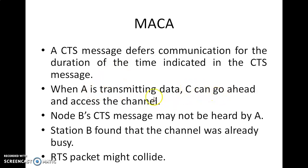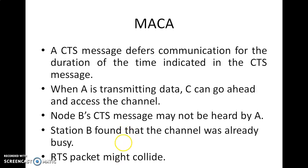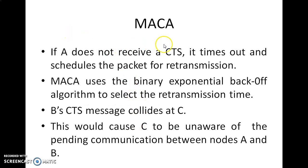When A is transmitting data, C can go ahead and access the channel. Note that B's CTS message may not be heard by A. If A is communicating to B and B's CTS message is not heard by A, station B may find that the channel is already busy. RTS packets may collide because of this. A does not receive the CTS message, so it times out and schedules the packet for retransmission.